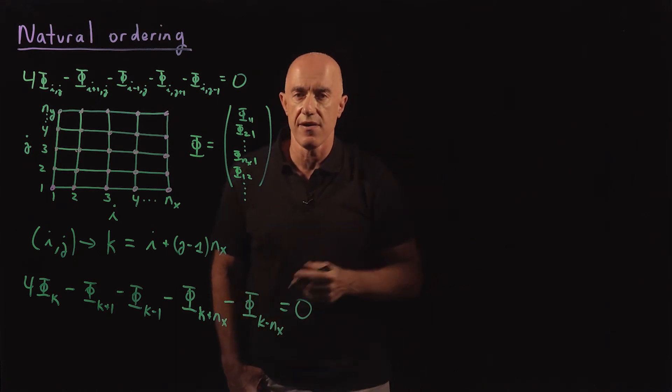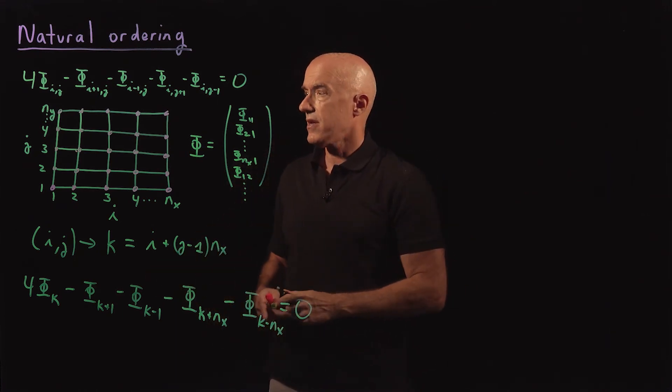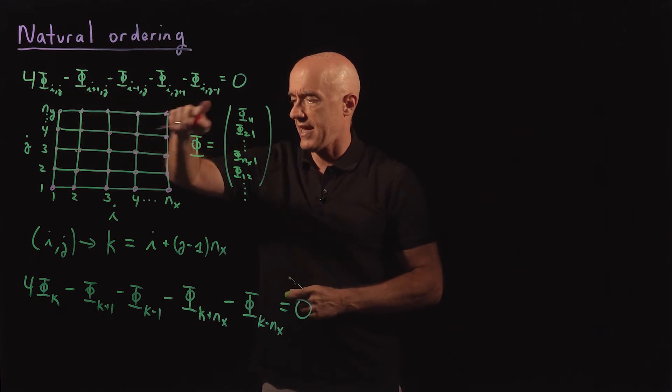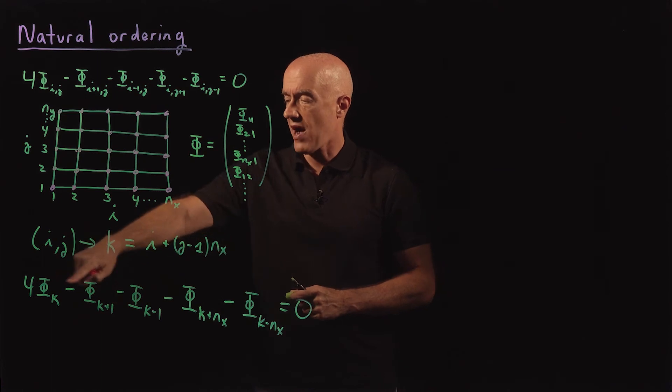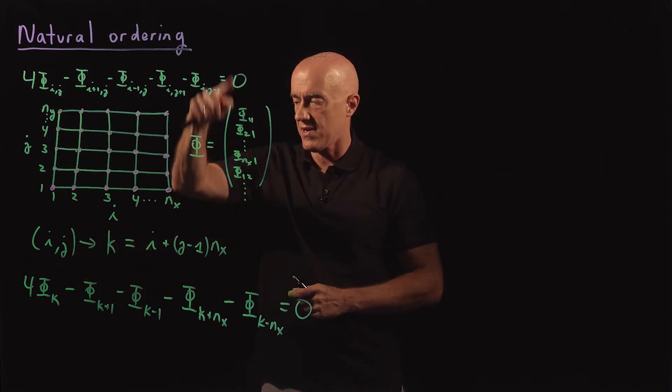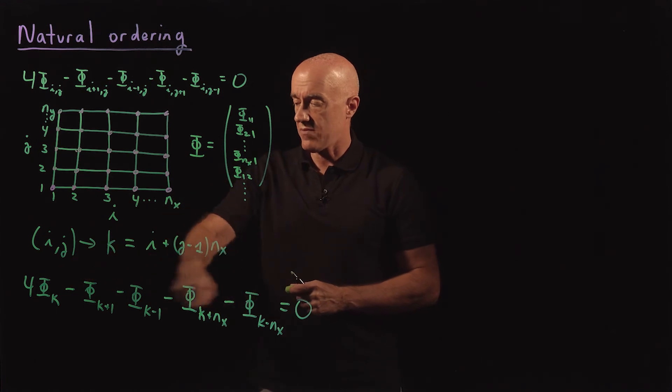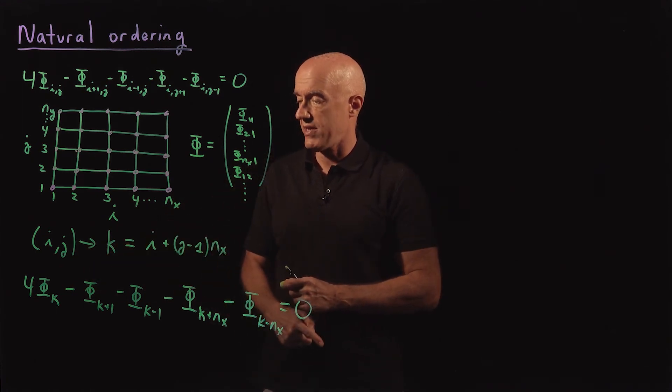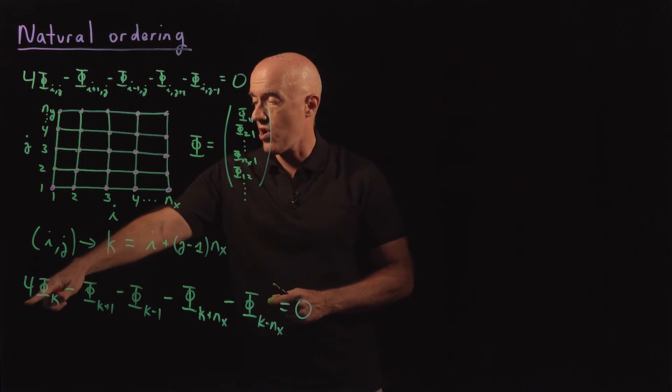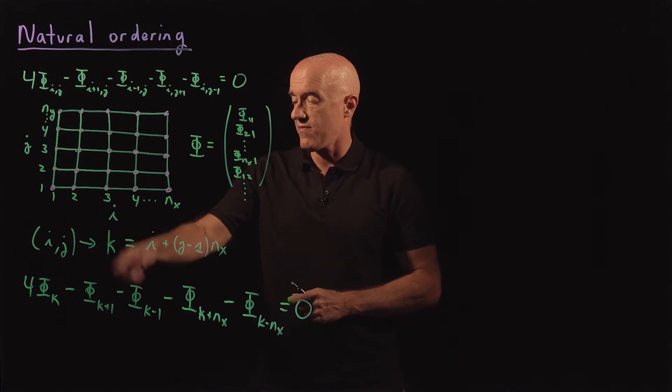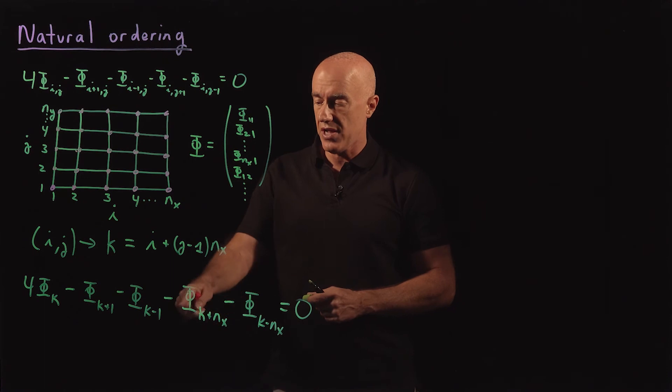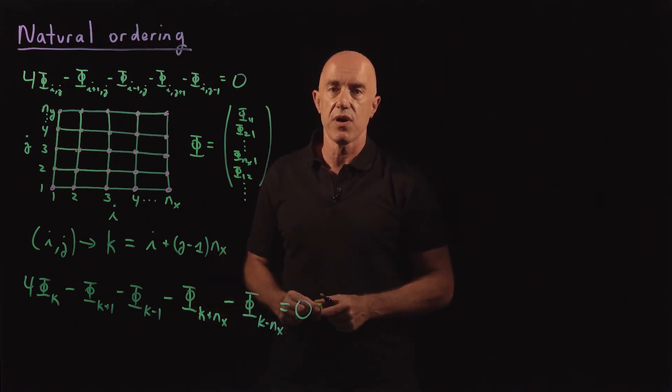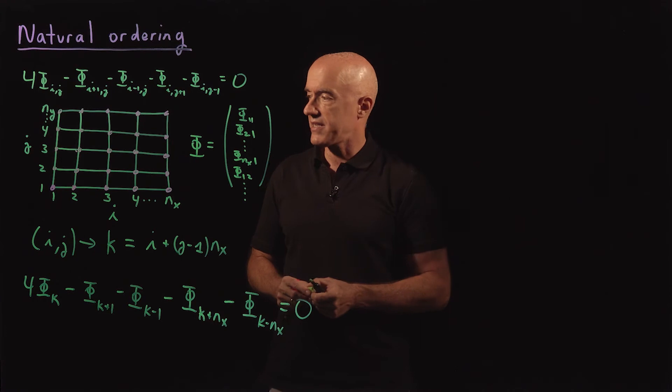So that's a little bit of figuring out. We're converting a two-dimensional index to a one-dimensional index. And then phi forms the elements of a column vector. From here, we can read a matrix equation. The matrix will have four going down the diagonals. Minus one and minus one, one above and one below the diagonal. And then a jump in diagonal elements where we also have minus ones. So we'll see what that looks like in the next video.